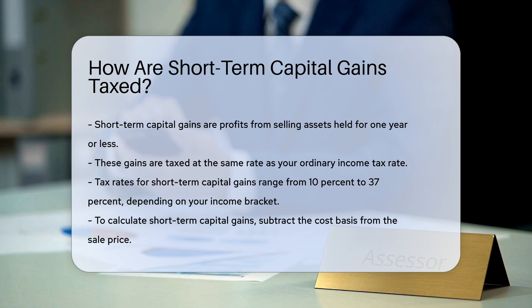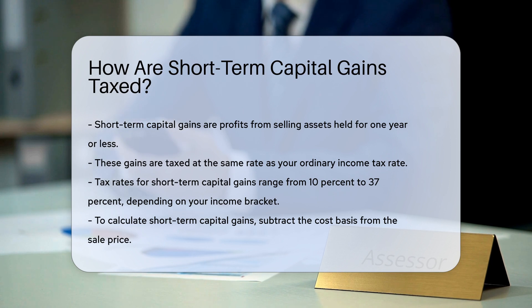The tax rate on short-term capital gains is the same as your ordinary income tax rate. This means short-term capital gains can be taxed at rates ranging from 10% to 37%, depending on your income bracket.